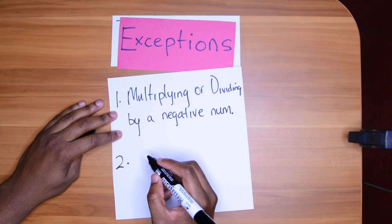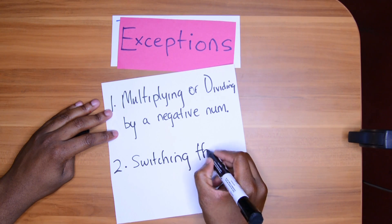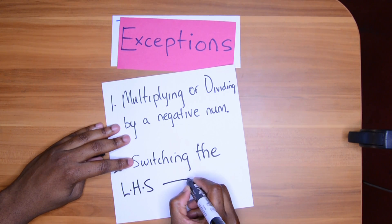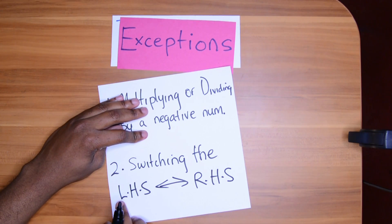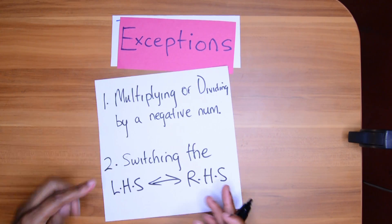Two, switching the LHS, switching the left-hand side with the right-hand side. If you swap from the left-hand side and the right-hand side, the inequality sign flips. Now these things are not best seen by me writing it down. It's best seen in an example. So let's do two examples.